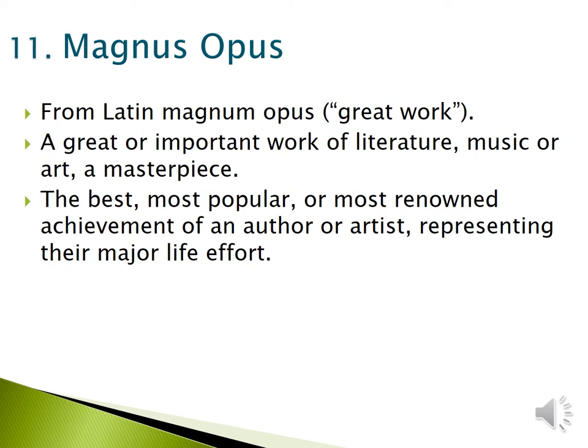Magnus Opus — from Latin magnum opus, meaning 'great work' — is a great or important work of literature, music, or art; a masterpiece. It is the best, most popular, or most renowned achievement of an author or artist representing their major life effort. The Truth About 666 by Edwin de Kock is his magnus opus.